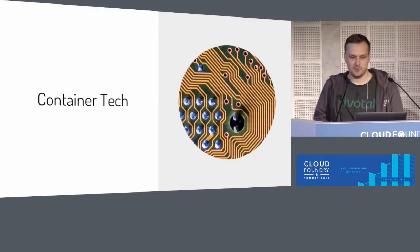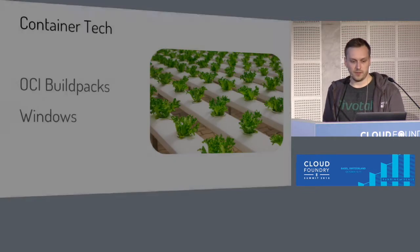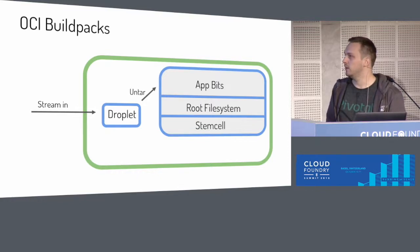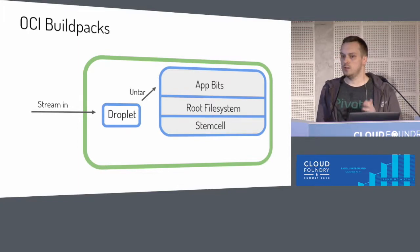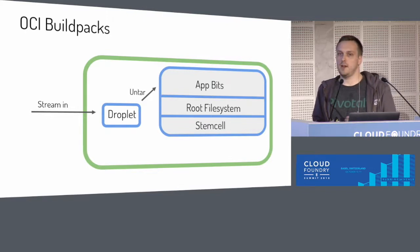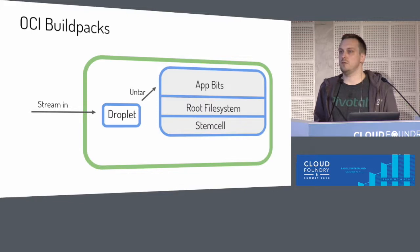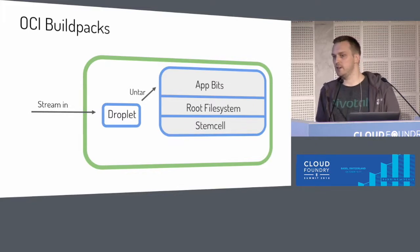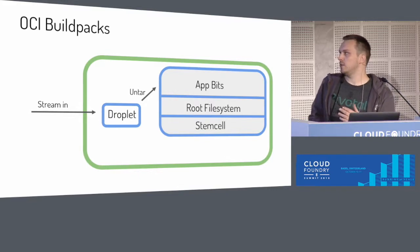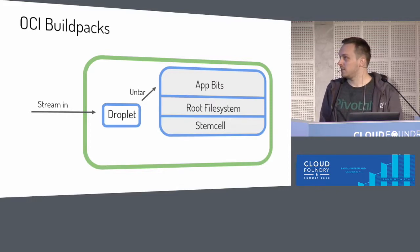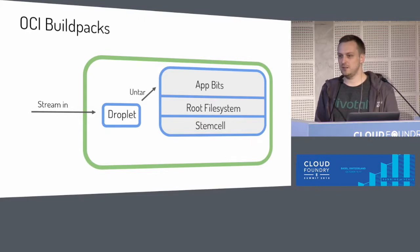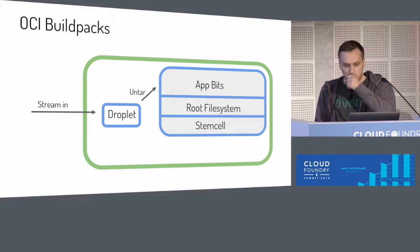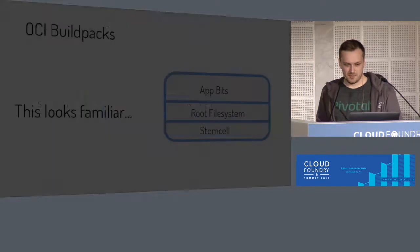Let's talk about cool container tech we've been working on. There's this thing called OCI Buildpacks. Let's step back and talk about what happens today when you CF push something. Garden will be asked by Diego to spin up a container. It's going to orchestrate with GrootFS to create the file system, laying down this root file system, then take the app bits — like your Python code and the Python runtime — stream that data into the container, untar it, and layer it on top of the root file system. And that really sucks — untarring is quite CPU intensive, downloading is quite slow, and it doesn't cache all that well.